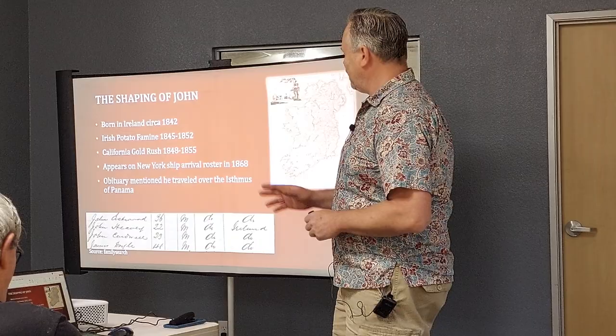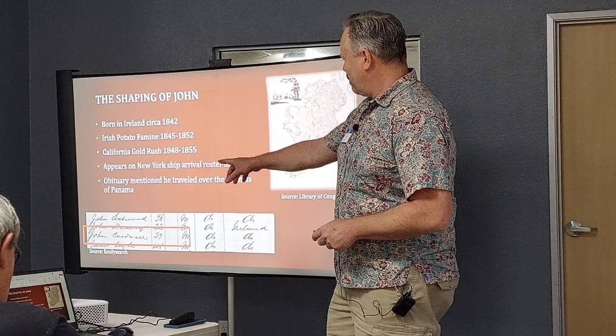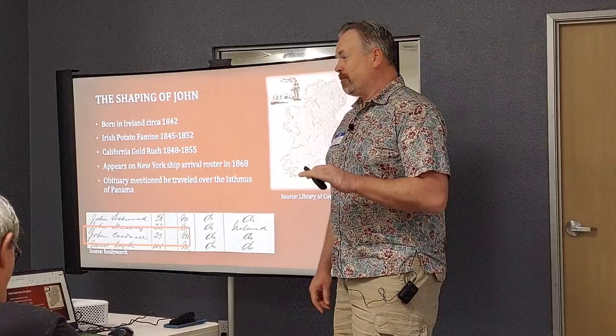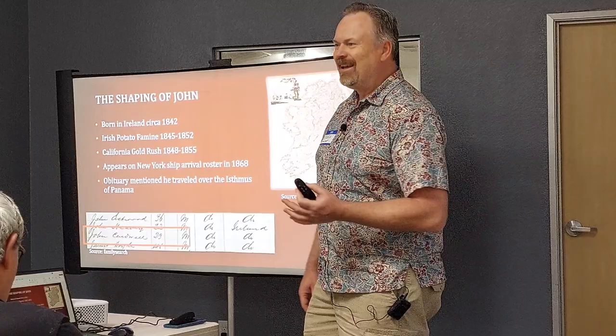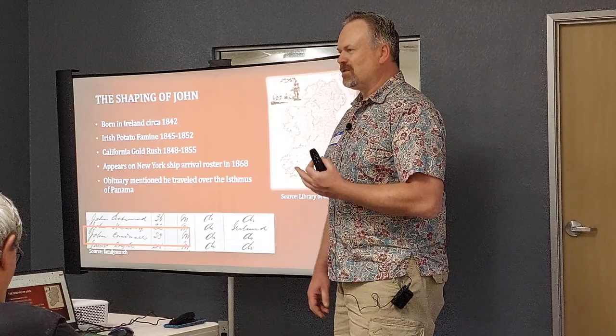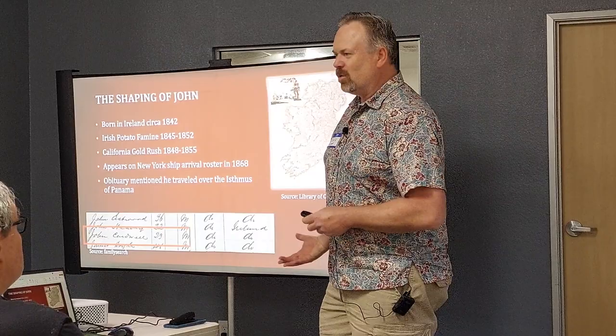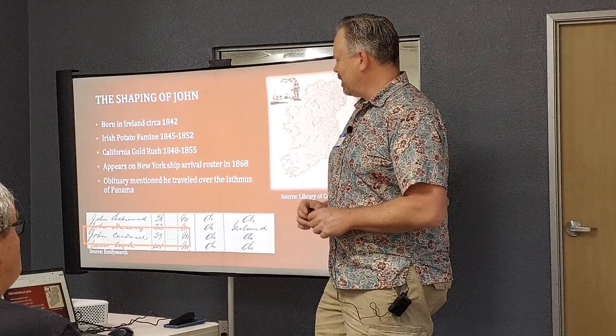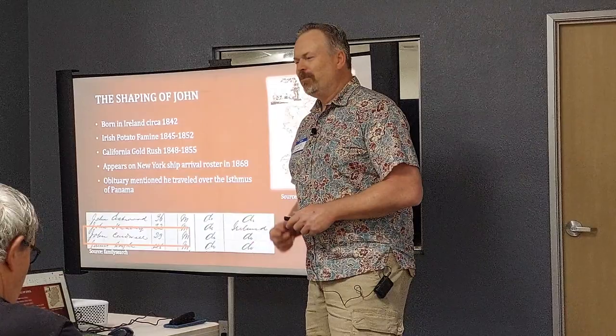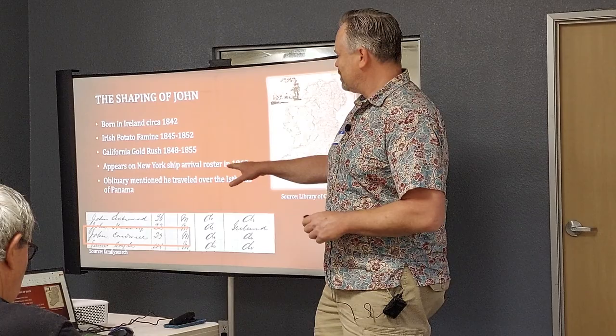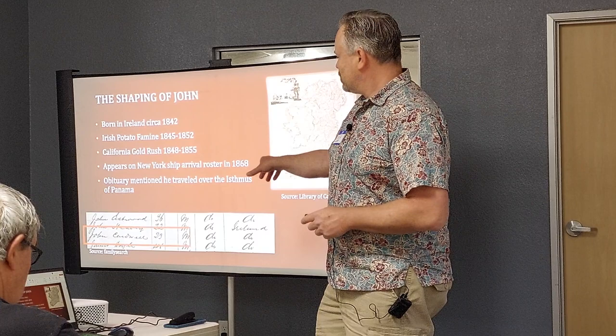In 1868, he shows up in a roster from a ship that came into New York, and you can see his name - John Cardwell - and he was about 23 years old. There were quite a few John Cardwells; it was almost like John Smith for Ireland. When researching John T. Cardwell, because his middle initial was T, you'd still end up finding a John T. Cardwell in Kentucky or Oregon. So I had to be careful. Theoretically there could have been another John Cardwell on that boat, but this is a pretty good match since he showed up in Sacramento the very next year.